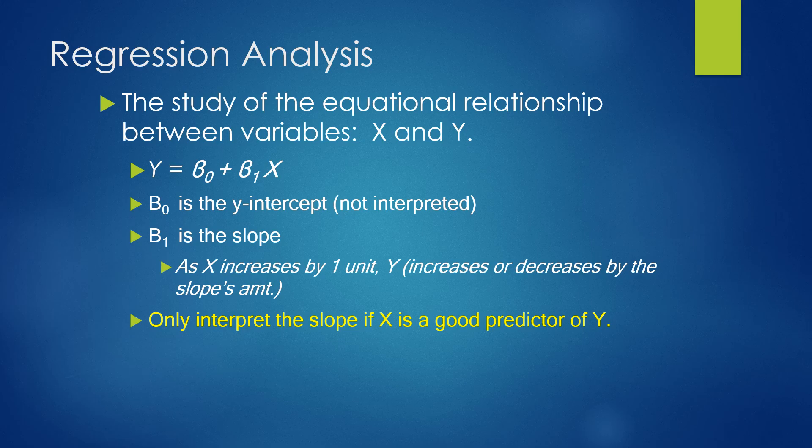This equational relationship between x and y is expressed as y equals beta sub naught plus beta sub 1 times x, where beta sub naught is where the data crosses the y-intercept. Beta sub 1 represents the slope.